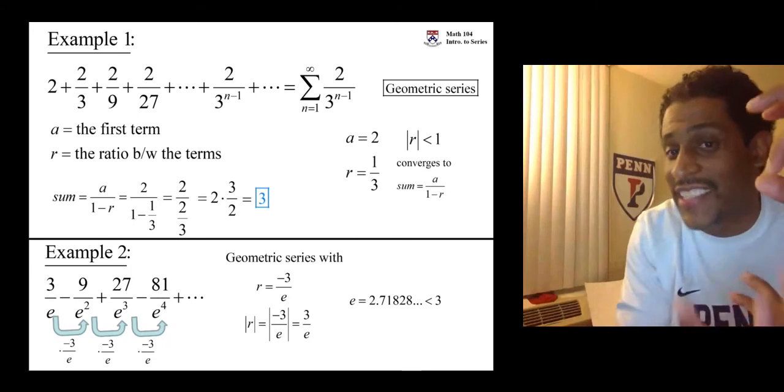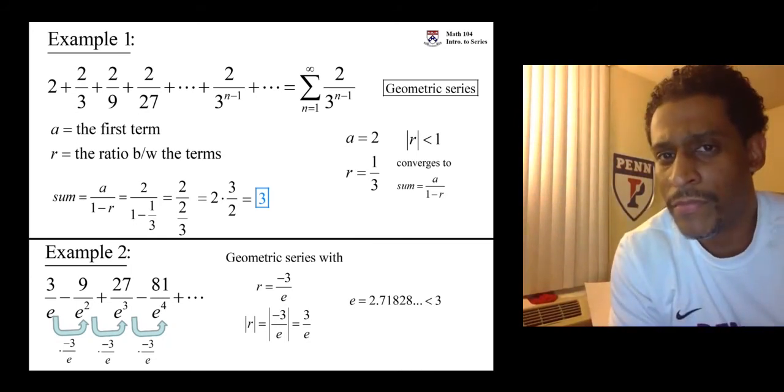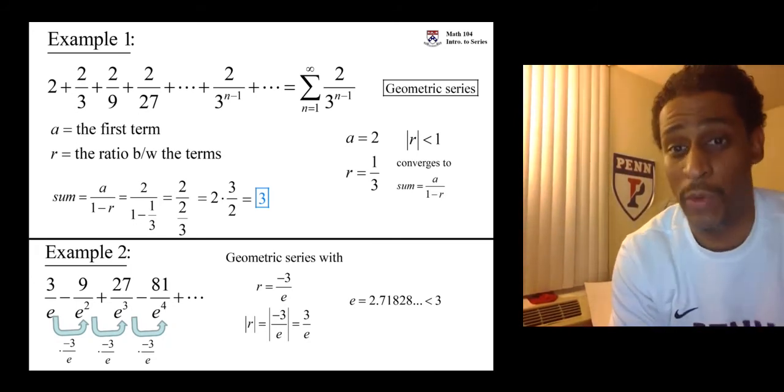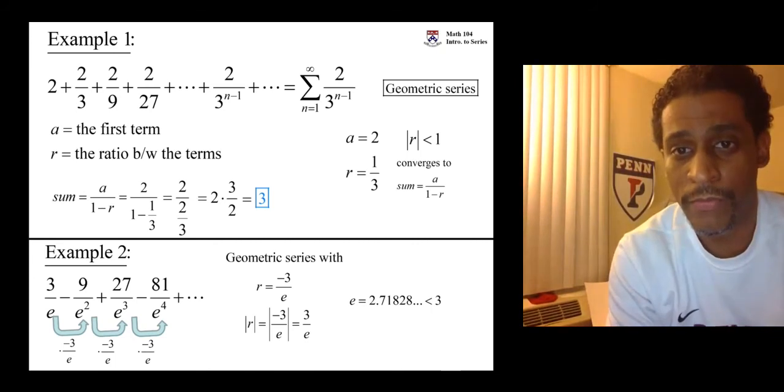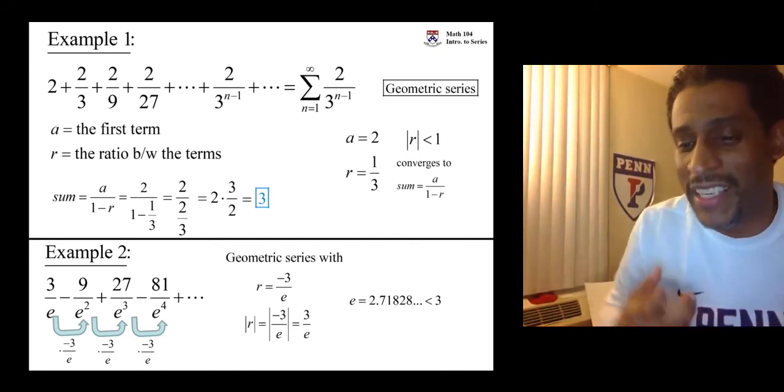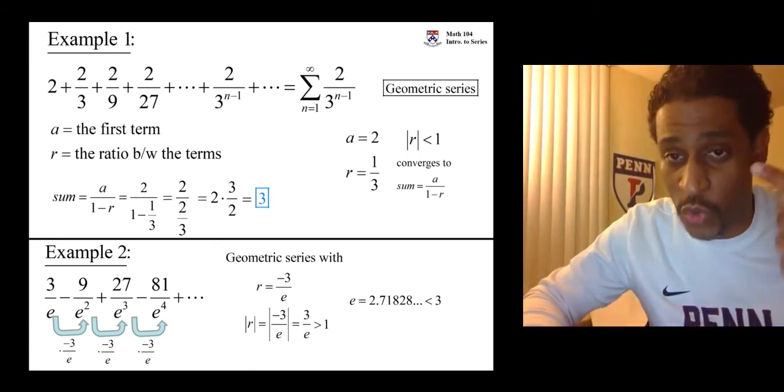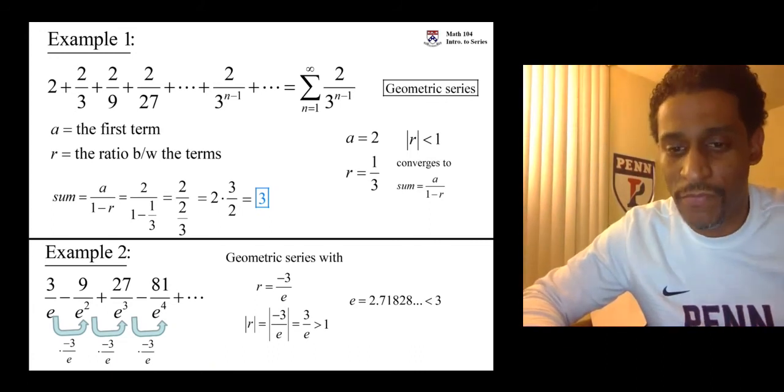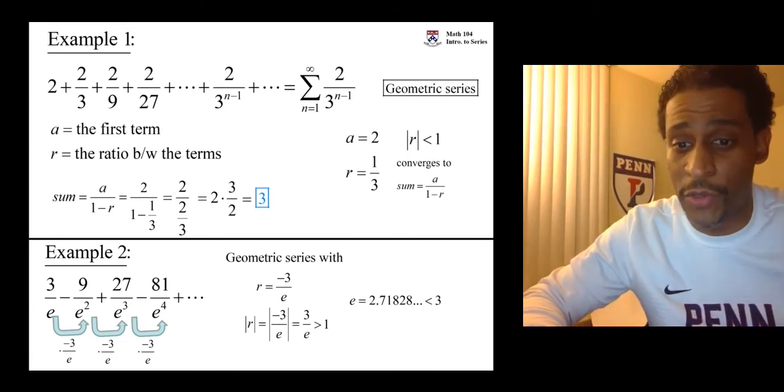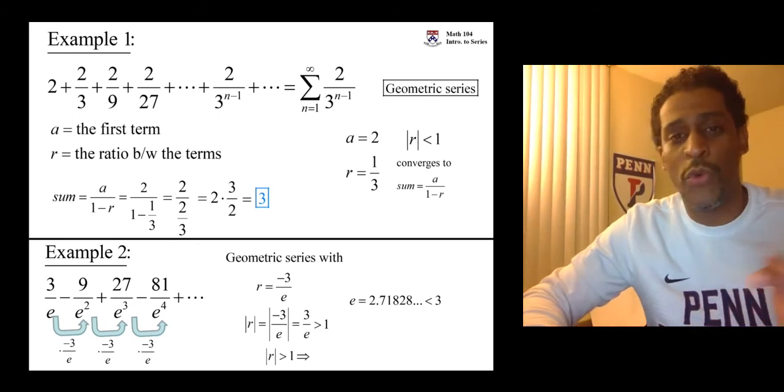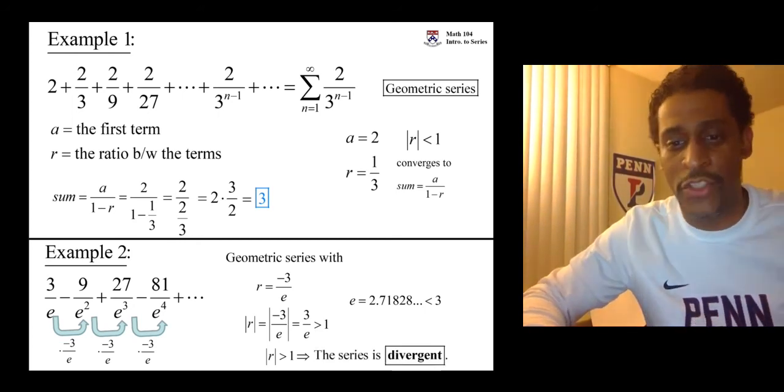Okay? You're dividing 3 by something less than 3. Is that going to be bigger than 1 or less than 1? That's what we need to know. Dividing 3 by something less than 3 is greater than 1. Well, if your ratio is greater than 1 in absolute value, we know that the geometric series diverges.